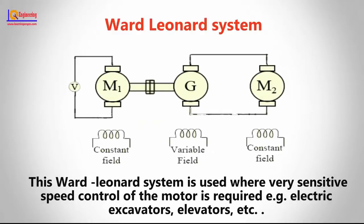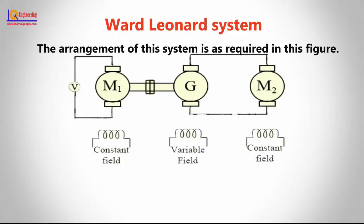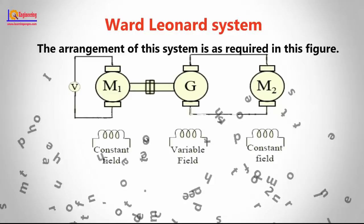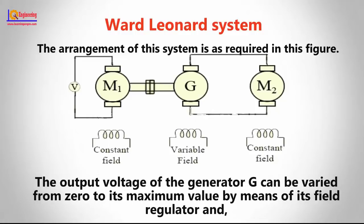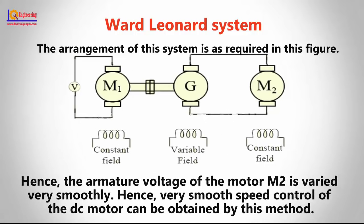The Ward-Leonard system is used where very sensitive speed control of the motor is required, for example in electric excavators and elevators. The arrangement of this system is as shown in the figure. In this method, the output from the generator G is fed to the armature of the motor M2 whose speed is to be controlled. The output voltage of the generator G can be varied from 0 to its maximum value by means of its field regulator, and hence the armature voltage of motor M2 is varied very smoothly, achieving very smooth speed control of the DC motor.